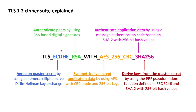The next part in the cipher suite to the right of ECDHE reads RSA, and this part of the cipher suite specifies that the peers involved in a TLS connection making use of this cipher suite are authenticated by using RSA-based digital signatures.